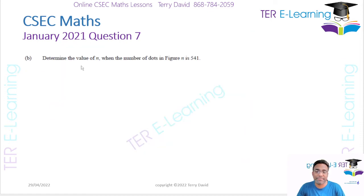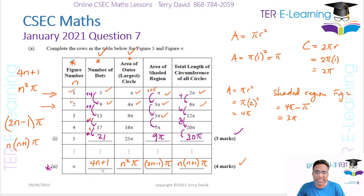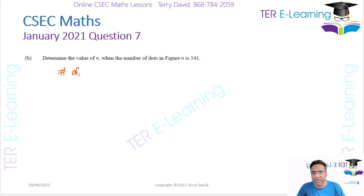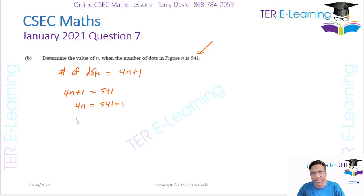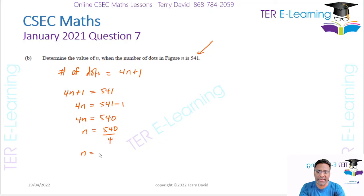Next part: determine the value of n when the number of dots in figure n is 541. The number of dots is given by 4n + 1, so we set 4n + 1 = 541. Therefore 4n = 540, so n = 540 ÷ 4 = 135. Figure 135 is going to have 541 dots.